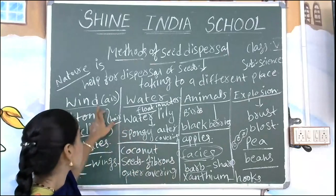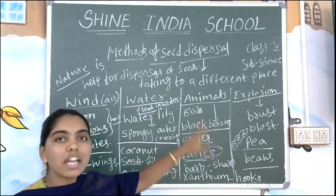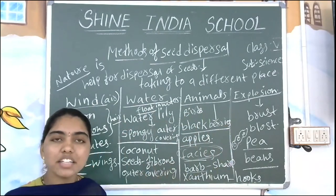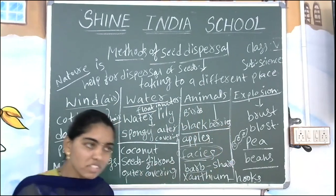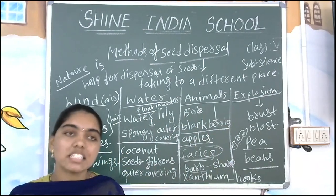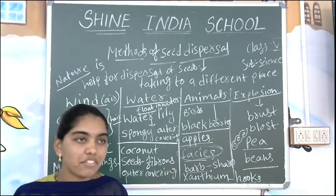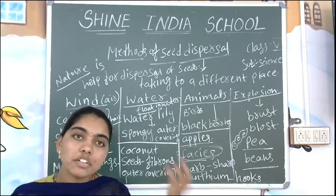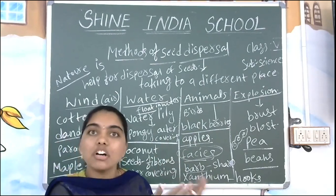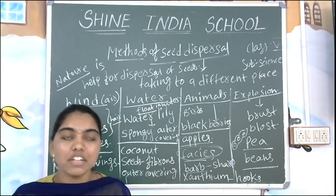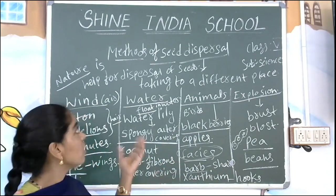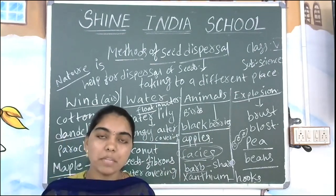In how many ways we have seen seed dispersal? Four. First one: wind. Second one: water. Third one: animal. Fourth one: explosion. The use of seed dispersal is that it helps to spread the seeds to different places and helps the seed to get water, air, and sunlight sufficiently. Also, if any natural calamities like heat waves, floods, or volcanic eruptions happen, seeds dispersed to different places can survive. This leads to the spread of seed variety and helps preserve the species for the next generation. This is our topic — methods of seed dispersal. We have completed our topic.